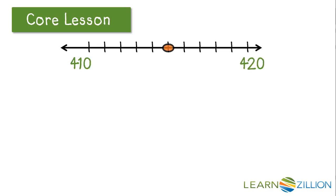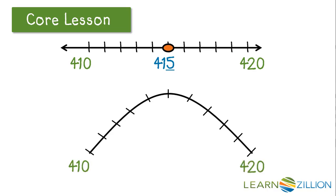We can take that same number line and turn it into a curved number line. Again, our benchmark numbers are 410, 420, and then our midpoint is 415.